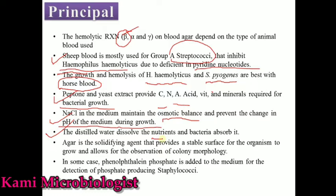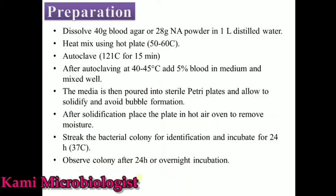We also use distilled water — using distilled water, all the ingredients and nutrients dissolve easily, allowing bacteria to absorb nutrients more effectively. That's why we don't use tap water, because tap water contains oils and other materials that interfere with nutrient mixing, making it harder for bacteria to take up nutrients. Mostly for media preparation we use distilled water, although some researchers do use tap water but it is not the best choice. Agar is used as the solidifying agent — it makes the media gel-like and provides a stable surface for bacteria to grow in the form of colonies that can be easily observed by naked eye. Sometimes we also add phenolphthalein phosphate, which helps identify Staphylococcus that can produce phosphatase.